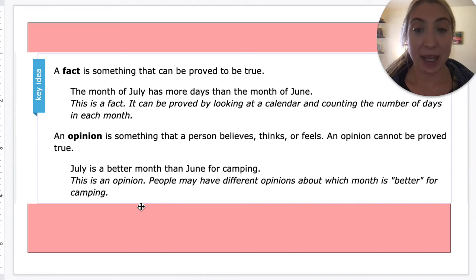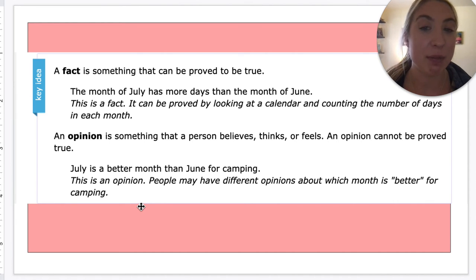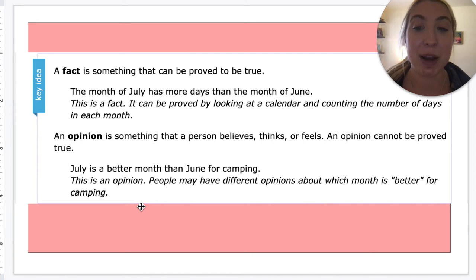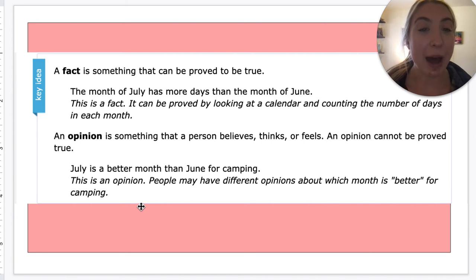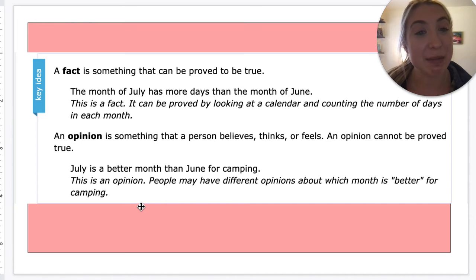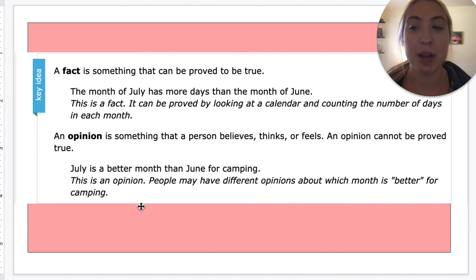An opinion is something that a person believes, thinks, or feels. An opinion cannot be proved true. So if I were to say July is a better month than June for camping, that's how I feel about it. Someone else might say, I think June is a better month for camping than July. So that's not a fact — it's not something that can be proven, but it's something that someone feels that way about.